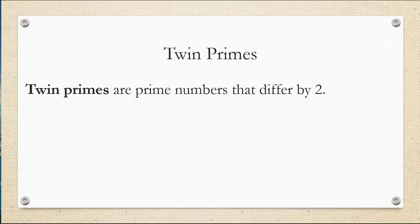Twin primes are prime numbers that differ only by two units. For example, three and five are twin primes.